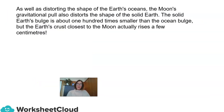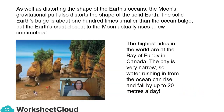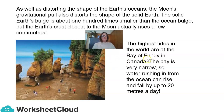As well as distorting the shape of the Earth's oceans, the Moon's gravitational pull also distorts the shape of the solid Earth. The solid Earth's bulge is about 100 times smaller than the ocean bulge, but the Earth's crust closest to the Moon actually rises a few centimeters. Here we have the world's highest tides at the Bay of Fundy in Canada. The bay is very narrow, so water rushing in from the ocean can rise and fall by up to 20 meters a day — quite extraordinary.